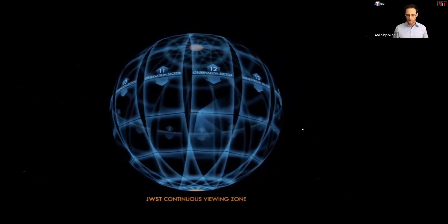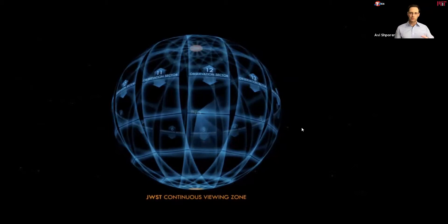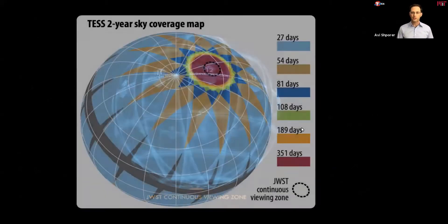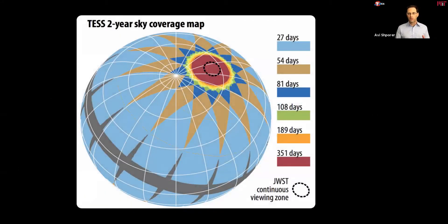And now in the extended mission, we are filling the gaps by repeating these observations. So here is a graphic illustration of how TESS is covering almost the entire sky. And at the pole, the North Pole and South Pole, these are the ecliptic North Pole and South Poles. We have a continuous viewing zone, which overlaps with the JWST continuous viewing zone.